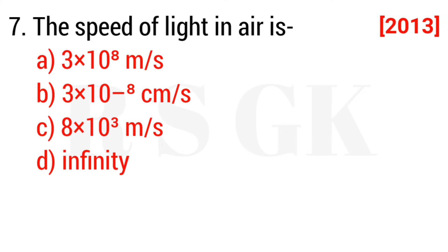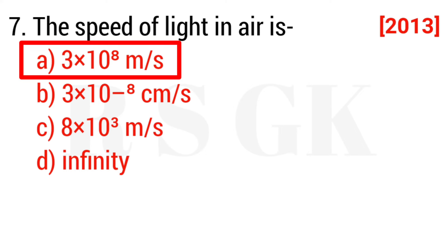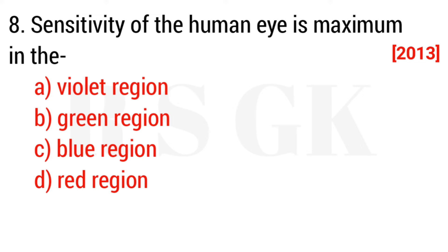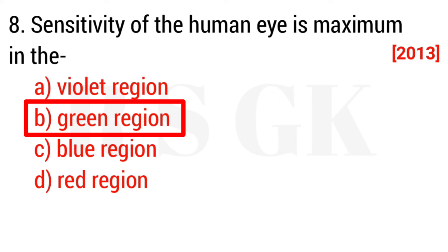Question 7: The speed of light in air is — the answer is option A, 3 × 10 to the power 8 meters per second. Question 8: Sensitivity of the human eye is maximum in the — the answer is option B, green region.